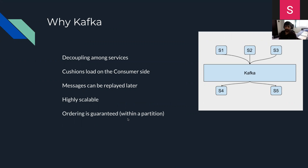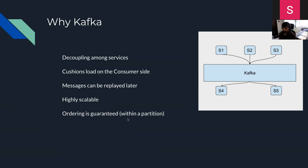So why Kafka? Going back in time, if there are various services that need to communicate, you would make a synchronous call from one service to another. But as systems produce more and more data and you need to build a reliable data pipeline, that's where Kafka comes in. The first benefit is decoupling services. Without Kafka, service one calling service four and five directly becomes a difficult-to-manage mesh.